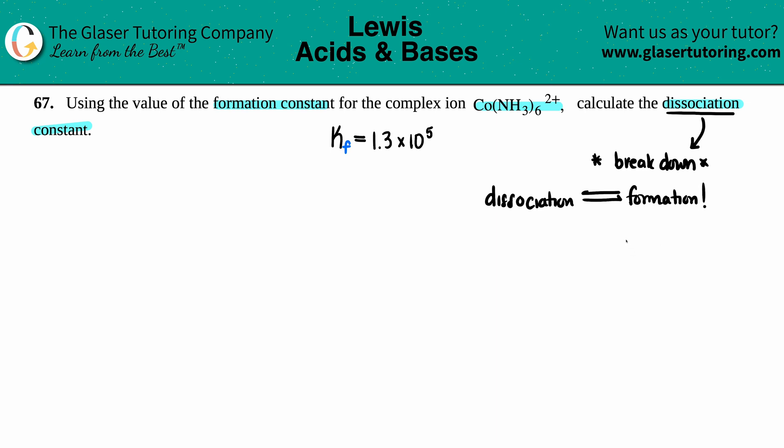If that's the case, the values are inverse as well. The formula is this: anytime you're trying to find your dissociation constant, which is Kd (d for dissociation), from your formation constant Kf (f for formation), it's just the inverse. So Kd equals 1 over the formation constant.